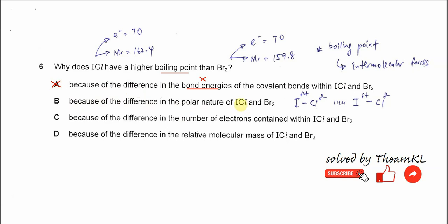For iodine chloride, because chlorine is more electronegative and iodine is less electronegative, the partial positive will be on the iodine, partial negative will be on the chlorine. This means it will form permanent dipole-permanent dipole forces, a stronger intermolecular force.